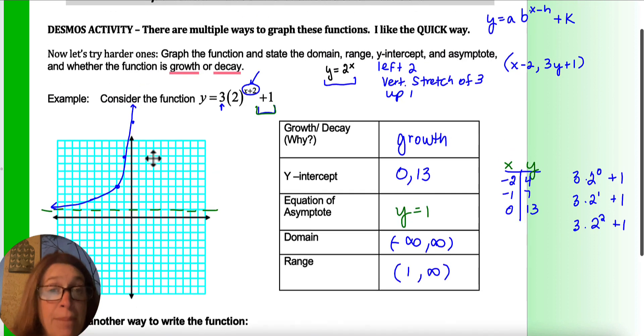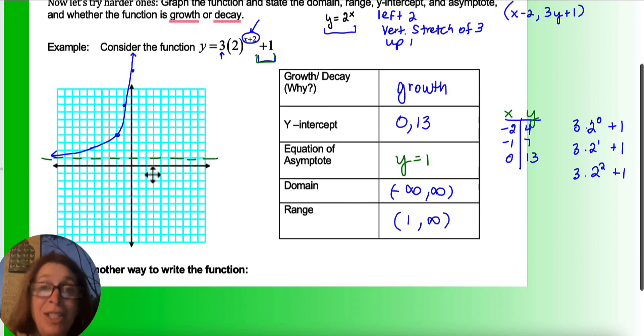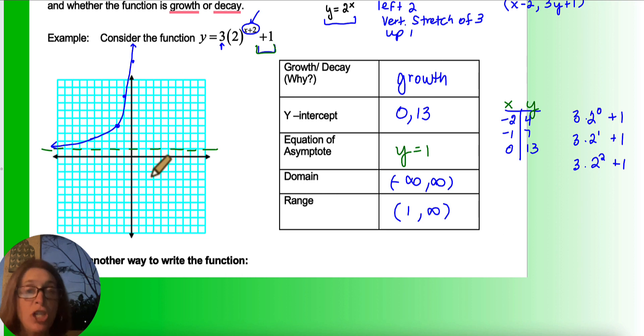What would be another way to write this function? So I mentioned that in an earlier video. In video 1, the graphs were really easy. You could see the y-intercept immediately when it was just in the form y equals ab to the x. Well, now I've got to shift, so I can't really see the y-intercept so easily. The laws of exponents told me that 2 to the x plus 2, another way to write that would be 2 to the x times 2 to the 2. Because remember, power to a power, add them.